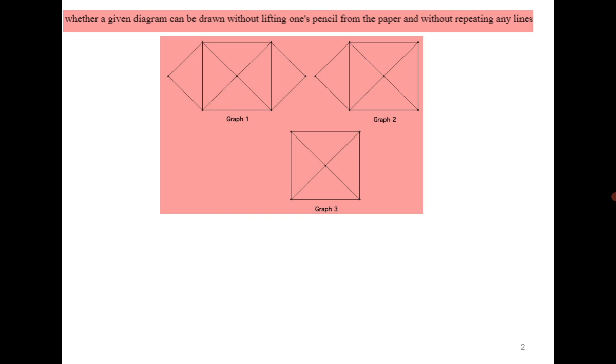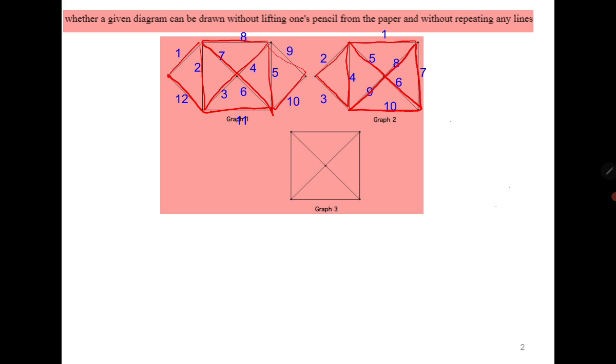When you try it, you find that for the first one it's possible as follows. We start with this edge, then two, three, four, five, six, seven, eight, nine, ten, eleven, and twelve and you reach back to one. For the second one we start from here: one, two, three, four, five, six, seven, eight, nine, ten. You started from this vertex and end up at this vertex. For the last one it's not possible.